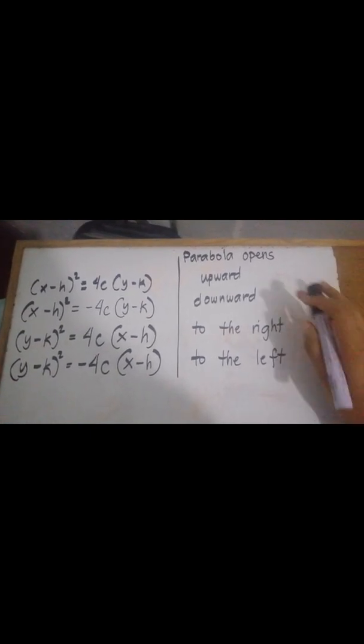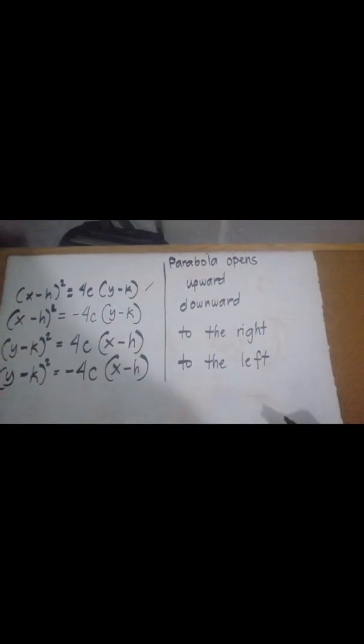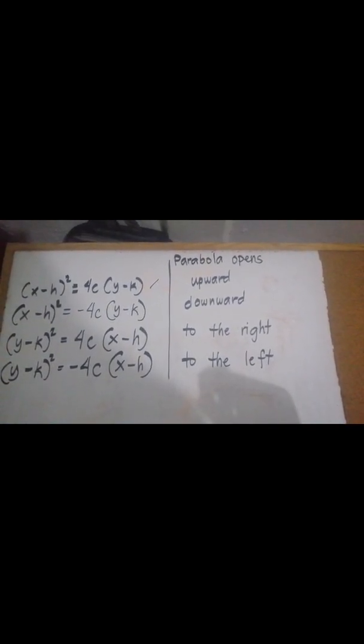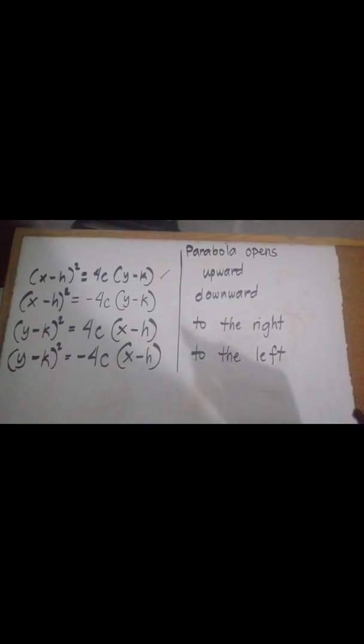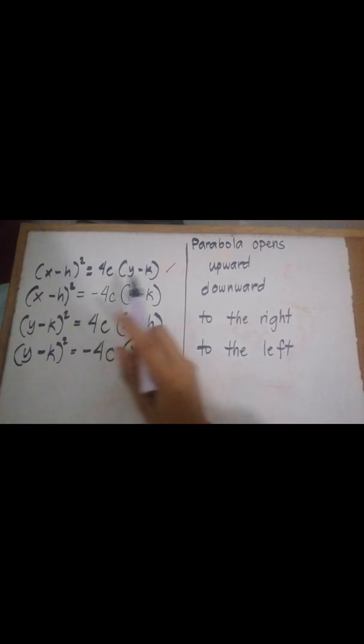If our parabola opens upward, our equation should look like this: the quantity of x minus h squared is equal to 4c times the quantity of y minus k. And if our parabola opens downward, it looks the same. However, we already have a negative sign here — that is negative 4c.